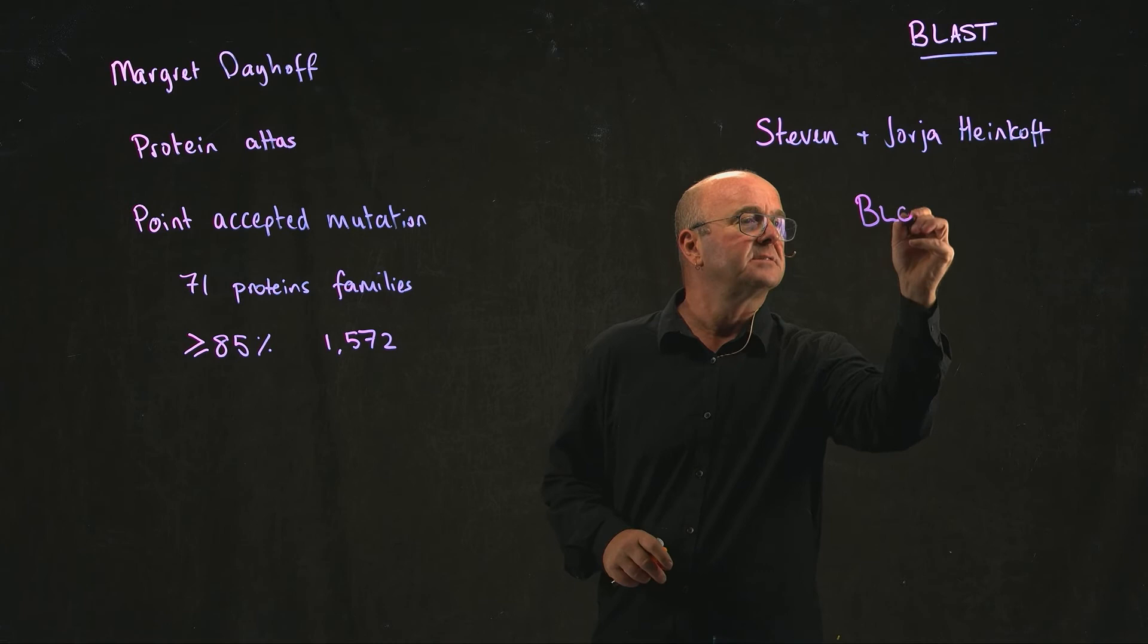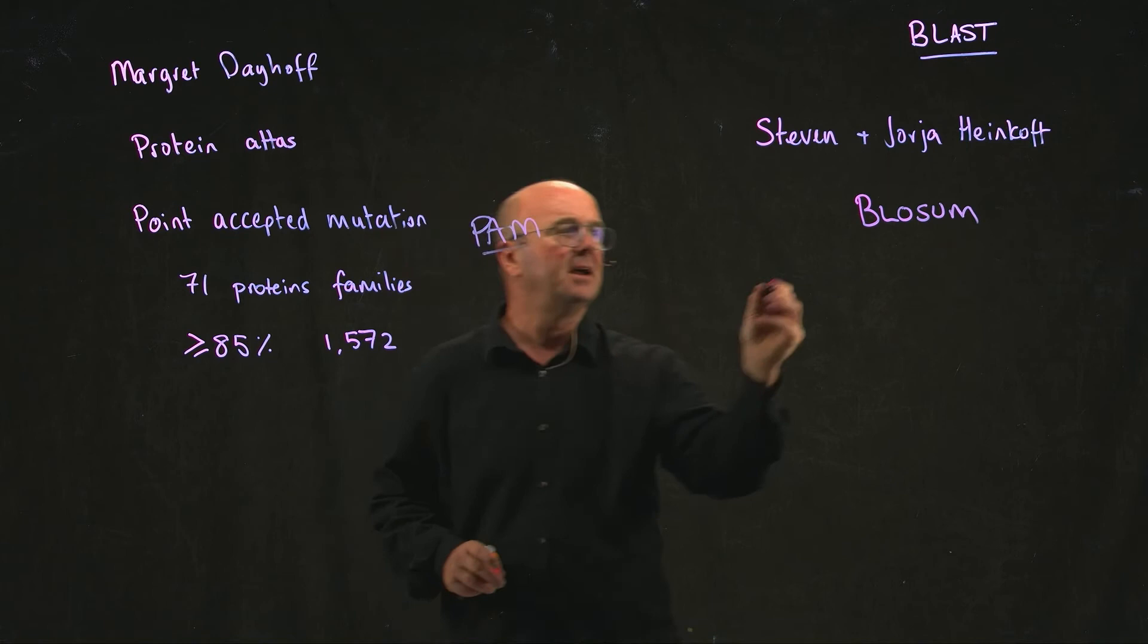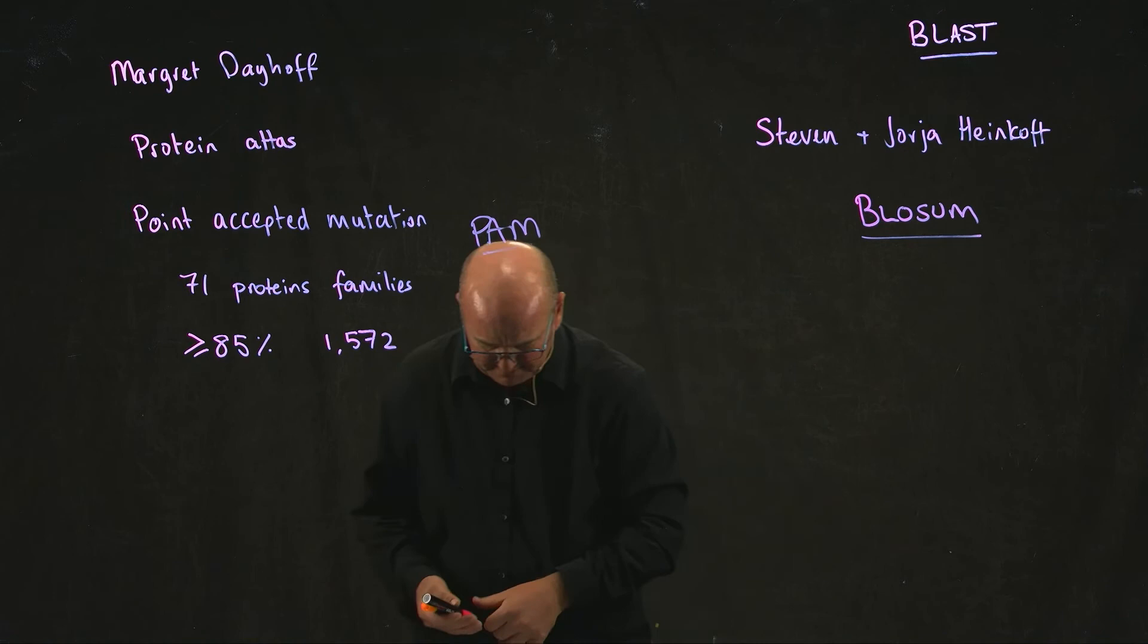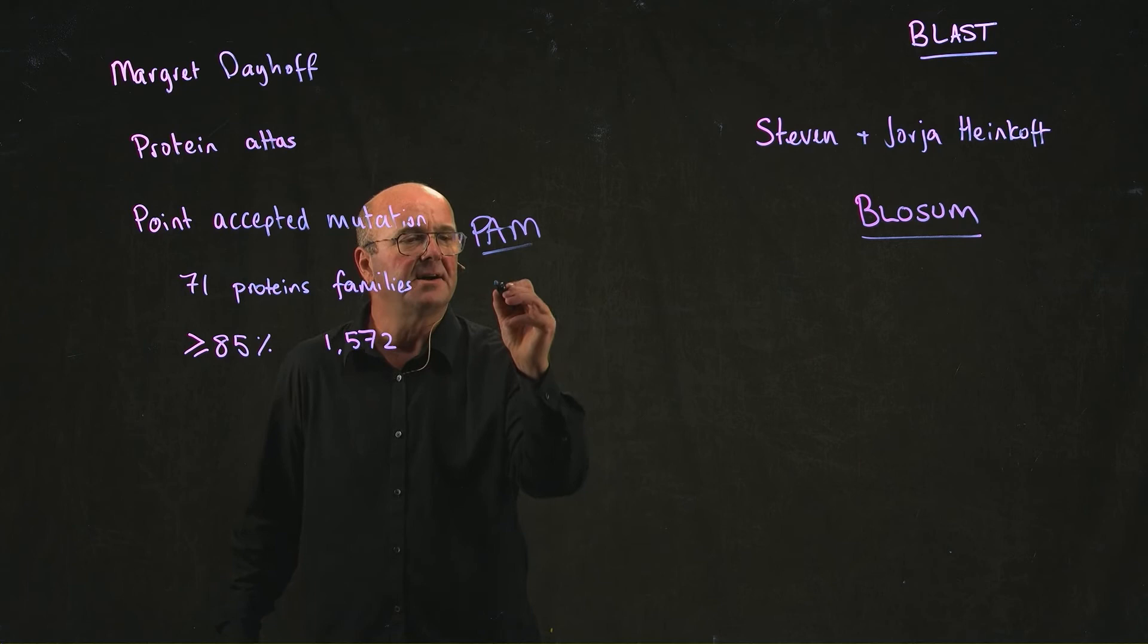On this side, it's called Blossom, and on this side, it's called Pam. And depending on your personal preference, you can basically use either of them. And for each different version, there are within them, there are also different versions.